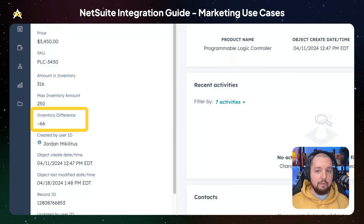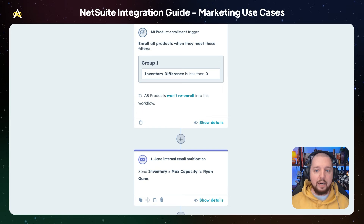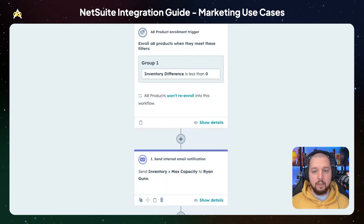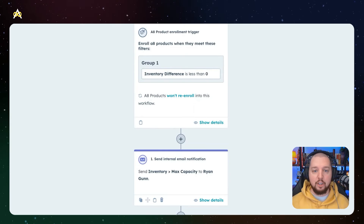Using this inventory difference property, we can create a workflow. So any time that number is negative — meaning there's more in the inventory than you have the capacity to store — we can send a notification to someone. In this case, we could send it to marketing so that they can run a promotion discounting this product, hopefully moving more out of inventory and getting it back down to a more manageable level.